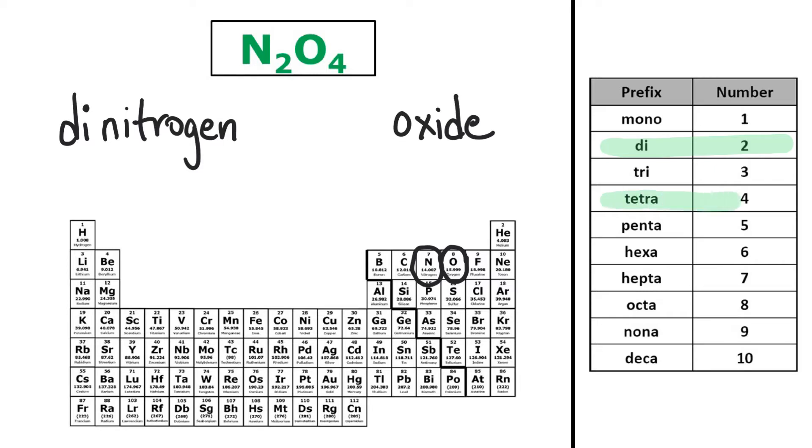And then for oxygen, it's four, so I'll add the prefix tetra, and because it's oxygen, I actually leave off that A, and it just becomes tetraoxide. So the name of this compound is dinitrogen tetraoxide.